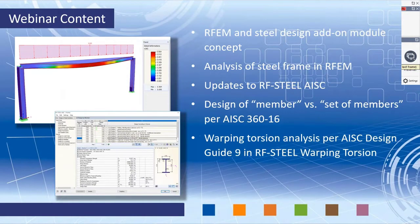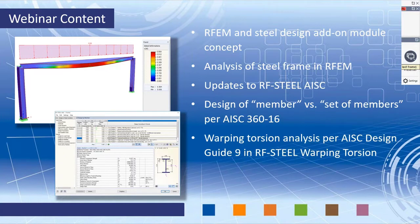Regarding the content for the next hour today, I want to quickly explain RFEM, which is our main finite element analysis program, and the steel design add-on module concept. From here we'll move into our first example and show you how to analyze a steel frame within the main program RFEM. Then we'll move on to design within the RF Steel AISC add-on module, covering some additional changes from our last release and the difference between member versus sets of member design. Lastly, we have a new add-on module extension called RF Steel Warping Torsion, which performs a warping torsion analysis considering seven degrees of freedom per the AISC Design Guide 9.